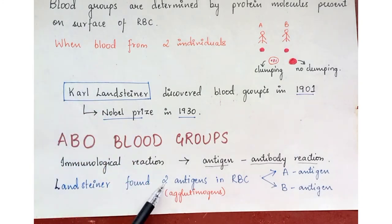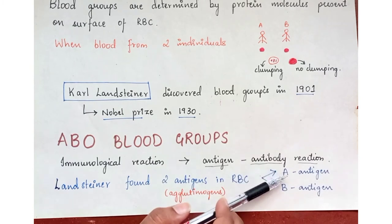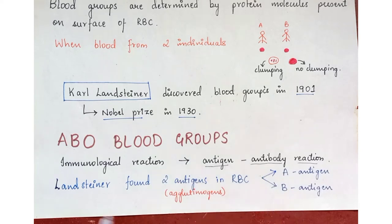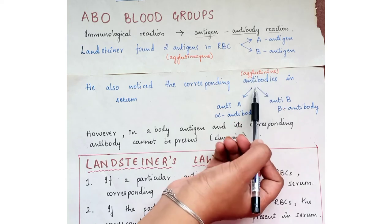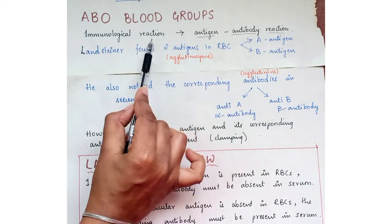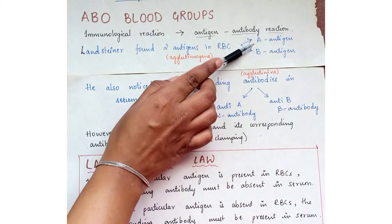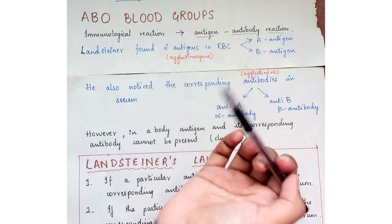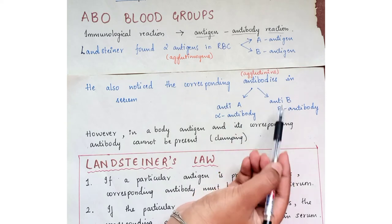Landsteiner found two antigens in RBCs — antigen A and antigen B — also called agglutinogens. He also noticed that corresponding antibodies, called agglutinins, were present in the serum. So the antigens on RBCs are A and B, and the antibodies in serum are anti-A (also called alpha antibody) and anti-B (also called beta antibody).